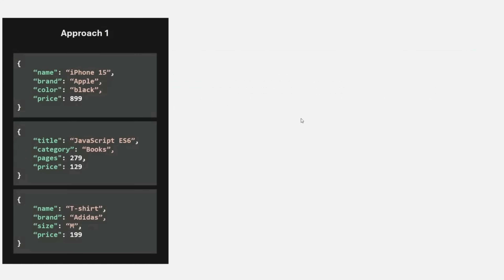For example, in a collection you can have two different documents with completely different structures, and MongoDB will not complain — because MongoDB is schema-less and does not enforce any schema. So in a collection you can have two documents with completely different fields and types. But this is not something you will need or use when building real-world applications, because here we do not have a predefined schema.